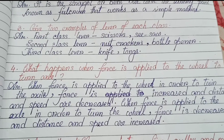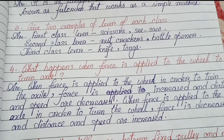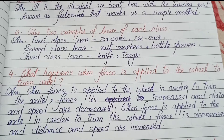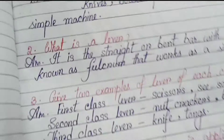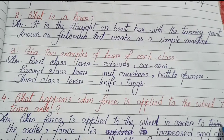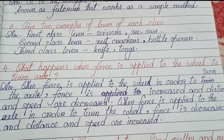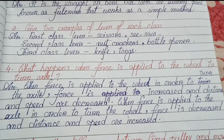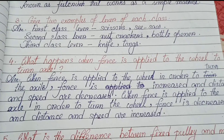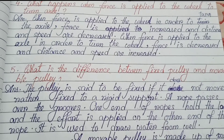Question four: What happens when force is applied to the wheel to turn the axle? When force is applied to the wheel in order to turn the axle, force is increased and distance and speed are decreased. When force is applied to the axle in order to turn the wheel, force is decreased and distance and speed are increased.